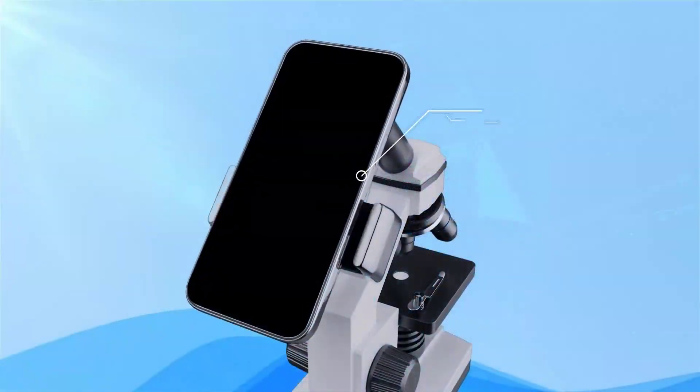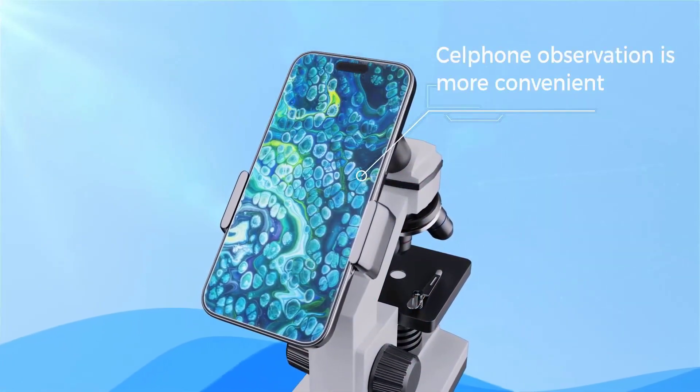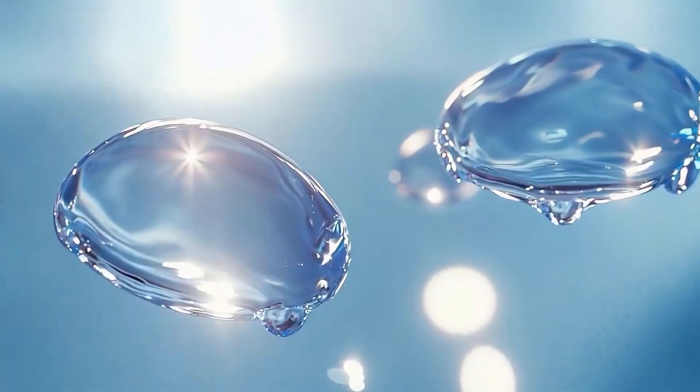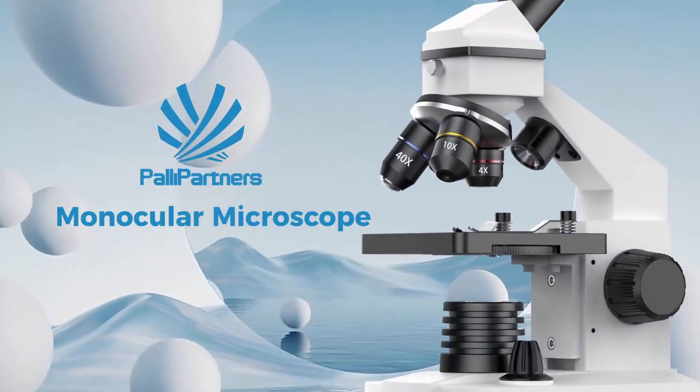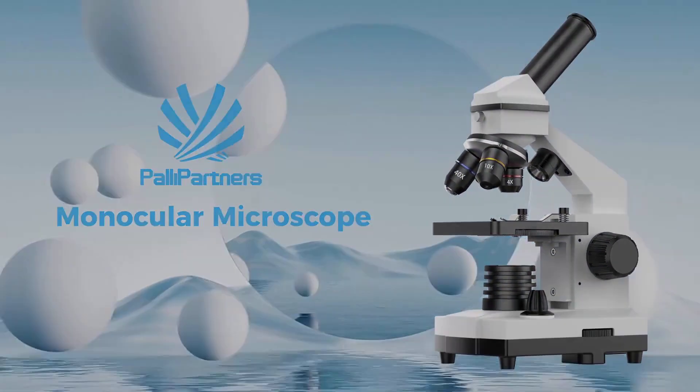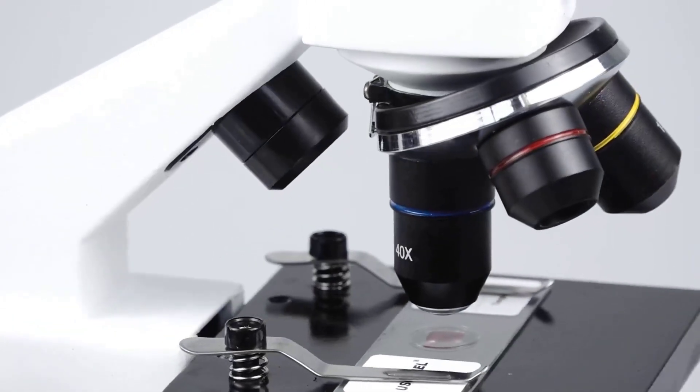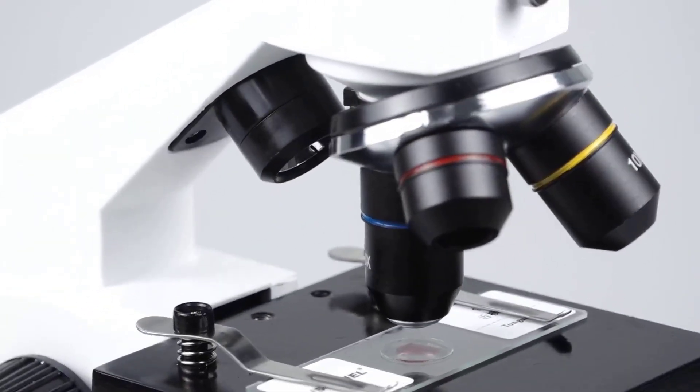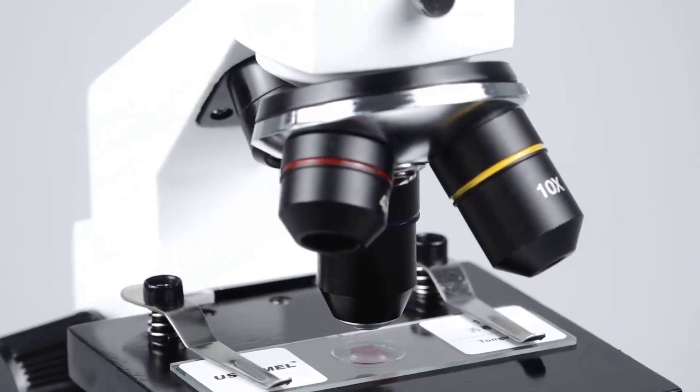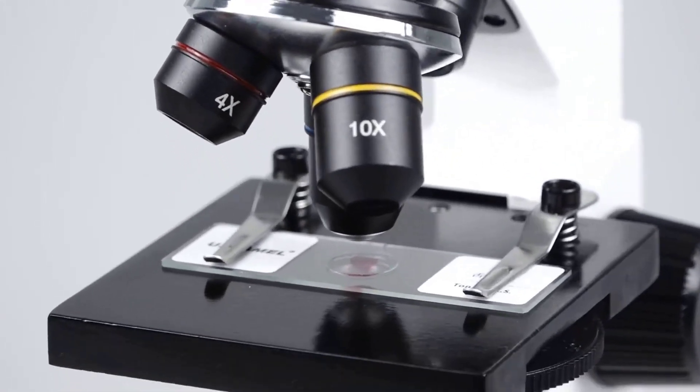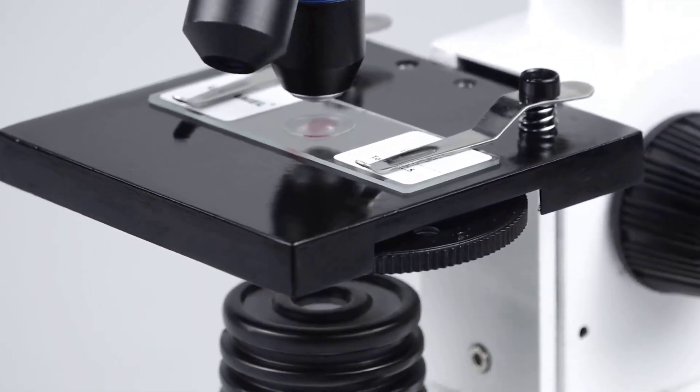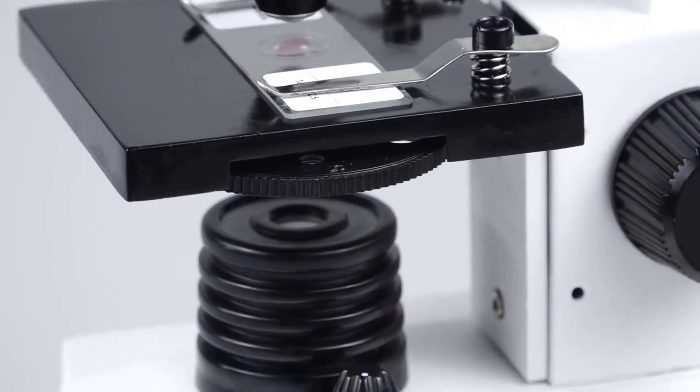A key highlight is the microscope's dual illumination configuration, featuring both overhead and base lighting systems. This thoughtful design ensures optimal visibility when working with translucent samples and various specimen types. The premium metal construction enhances durability and stability during use, distinguishing it from lower quality plastic alternatives. The focusing mechanism, though slightly firmer than some luxury models, delivers the precision needed for detailed observations.